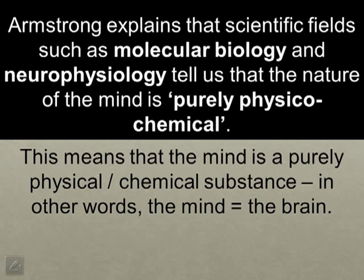Still on the first page, Armstrong talks about a couple of different scientific fields that tell us some information about the nature of the mind. The first one he briefly touches upon is neurophysiology — the study of the nervous system and how the nerves work in our bodies. He also mentions molecular biology, which is the study of our cells and how our cells are made up at a very fundamental level, such as what cells we have in our brains and how that all works.